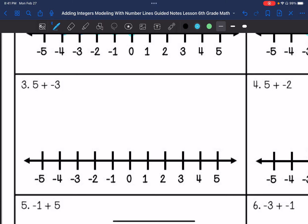Number three: five plus negative three. So we are going to go to the right because it is a positive five: one, two, three, four, five. Plus negative three, we're going to go to the left three: one, two, three. So our answer is going to be positive two.